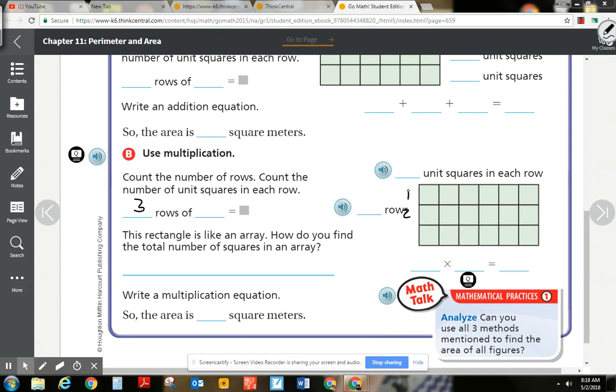You should always show your work like this. Three rows of six. So there's three rows. There's six unit squares in each row, so it's three times six equals 18.